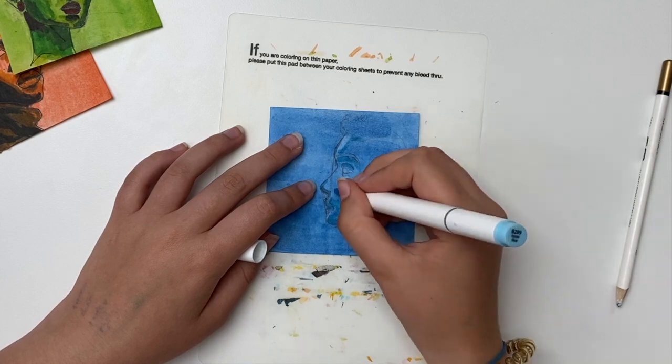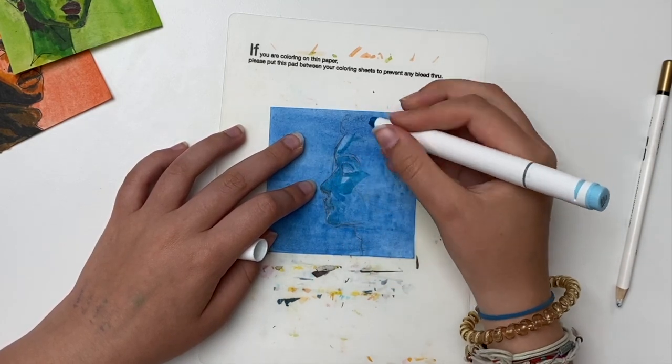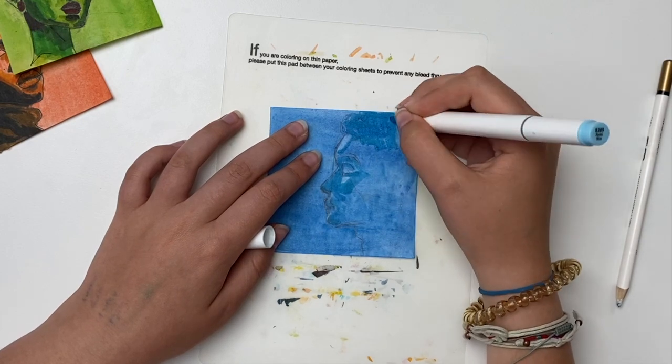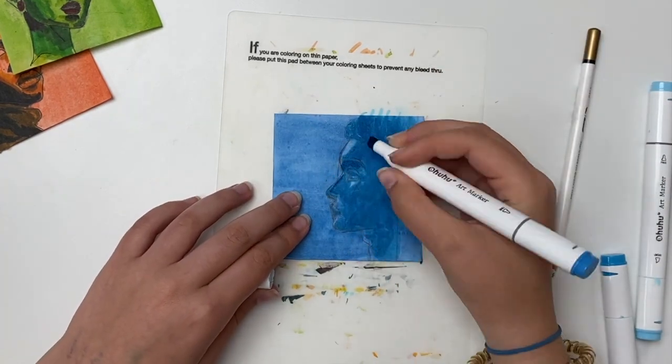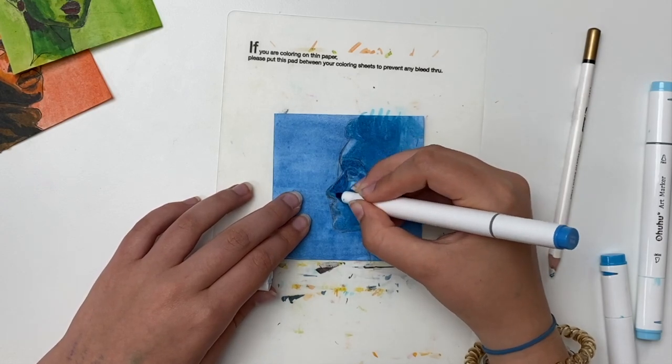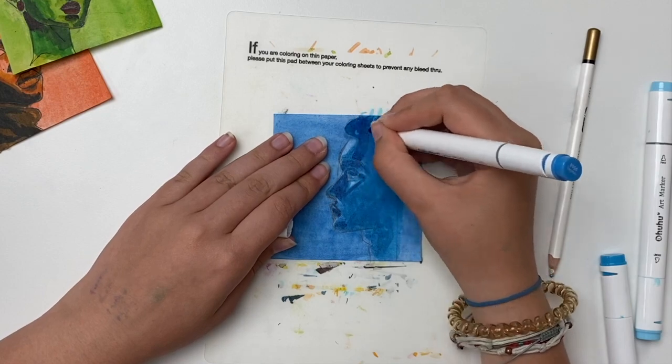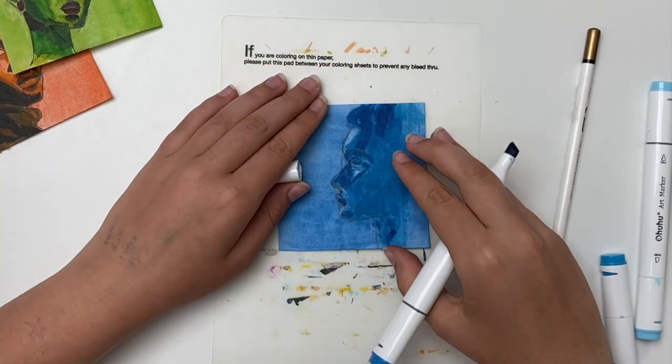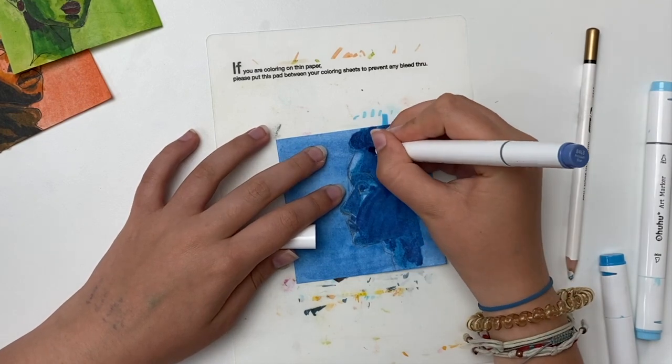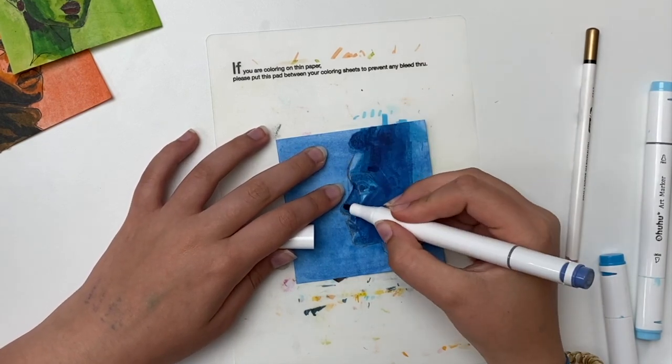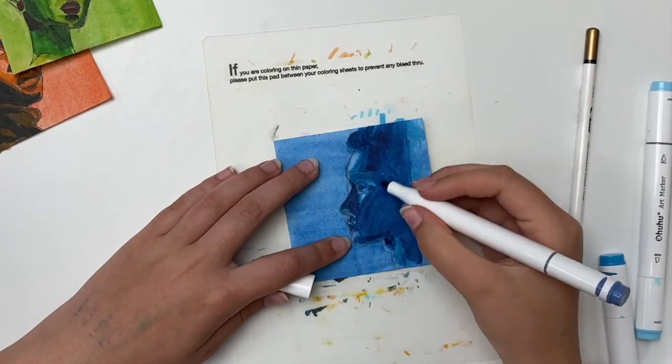I started off with my lightest blue Ohuhu marker and just put it around the edges because it's going to be the lightest, but made sure to leave out the highlighted areas that I erased so they stay highlighted. Then I just gradually moved on to darker and darker blues just to make the shade more visible.